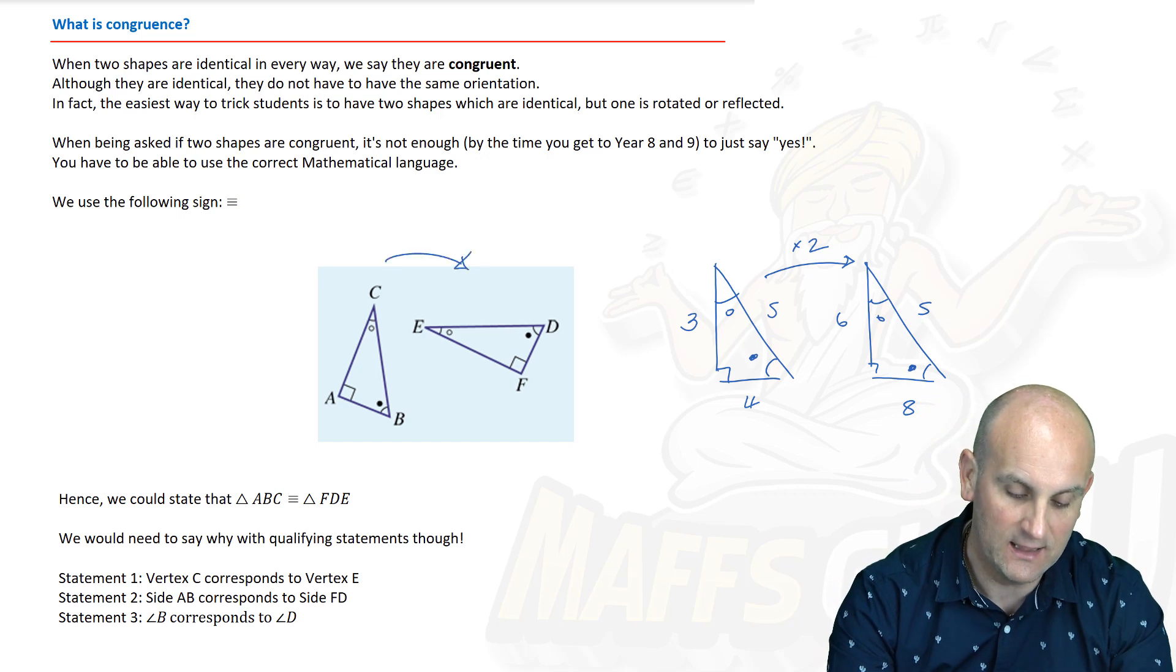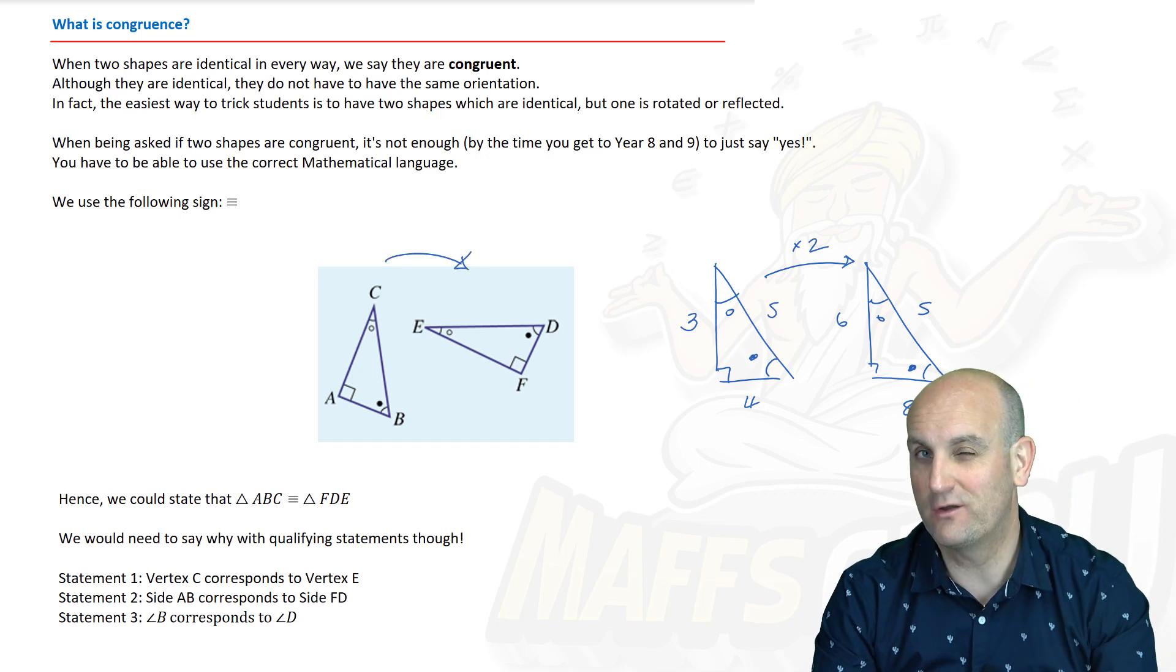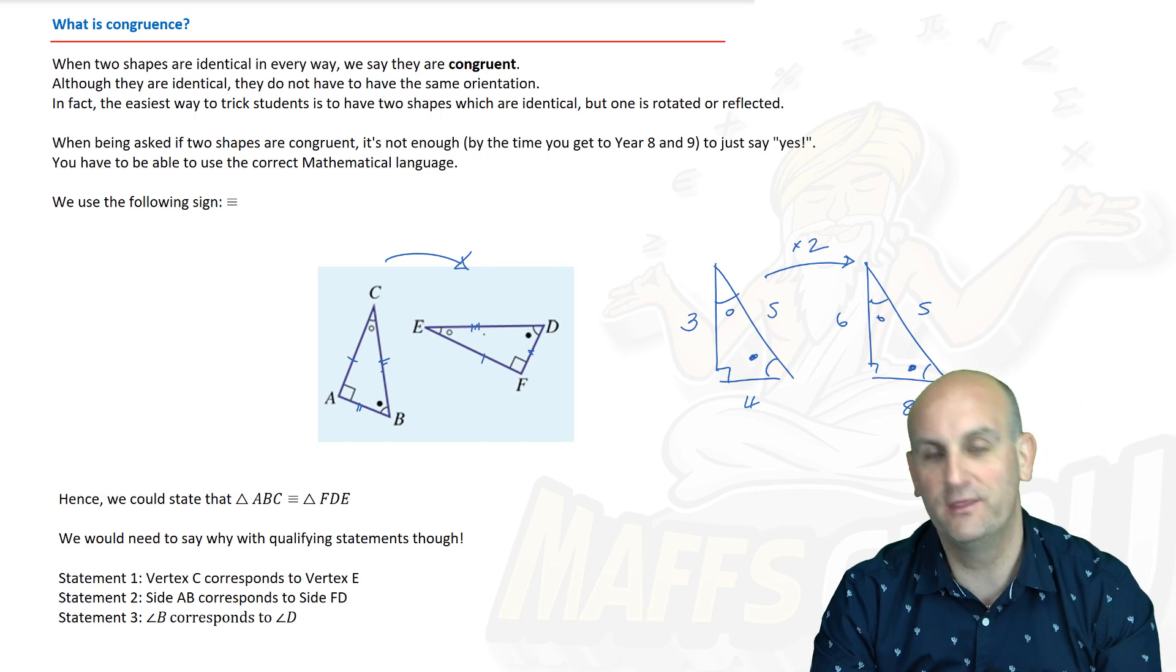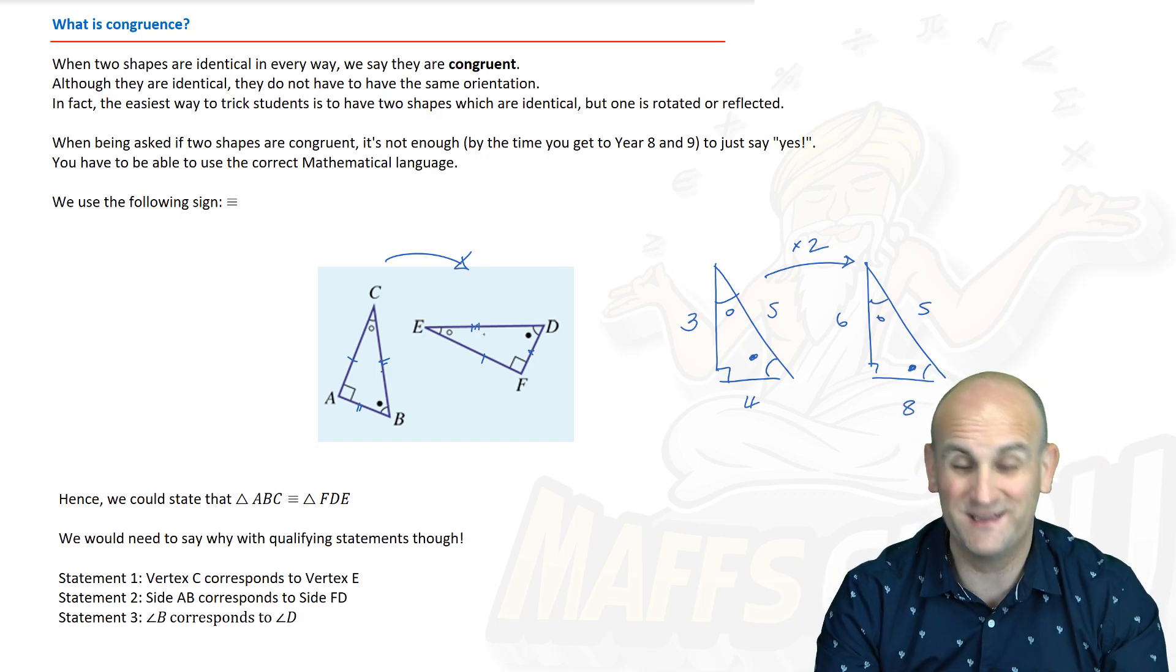Let me ask you a question, are those shapes congruent? Probably not. Well in fact definitely not because the sides are different lengths, but does that mean that because obviously this triangle here is twice as big as my first triangle, are the angles twice as big?